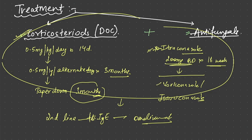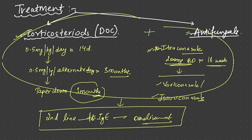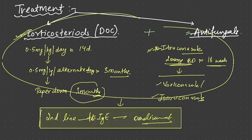If doesn't work, voriconazole. If doesn't work, isavuconazole. If this first line treatment doesn't work, we give second line treatment, that is omalizumab. So that is all about ABPA. Thank you so much for efficient listening.